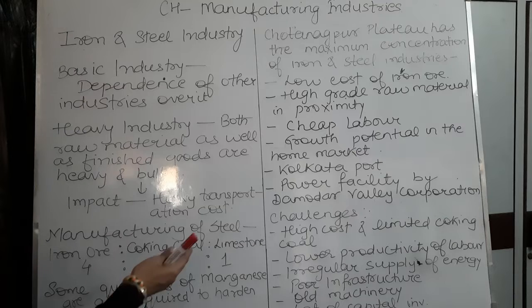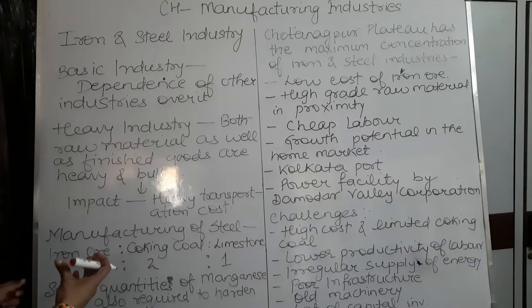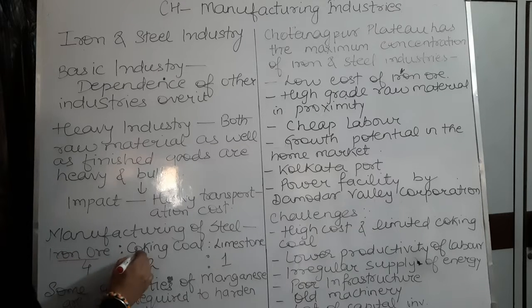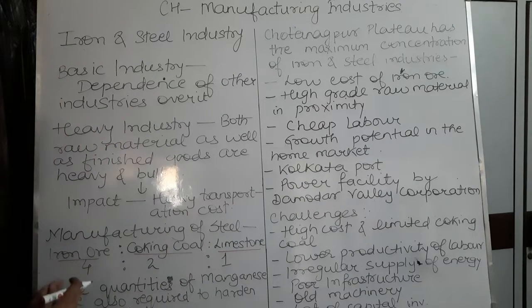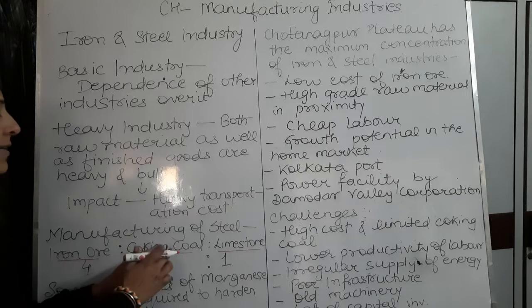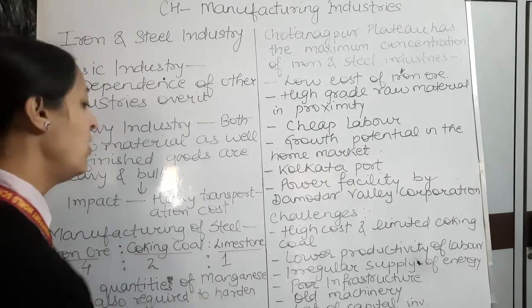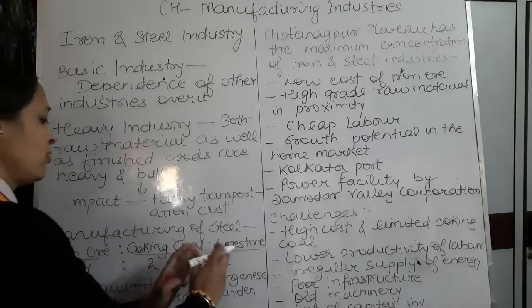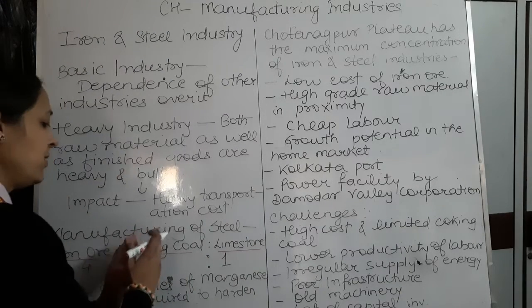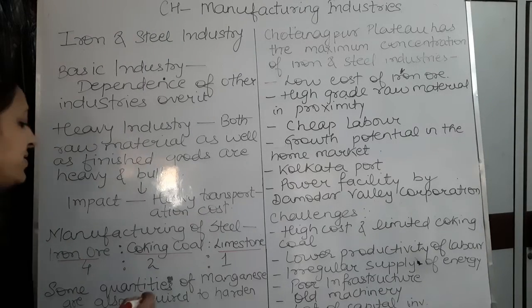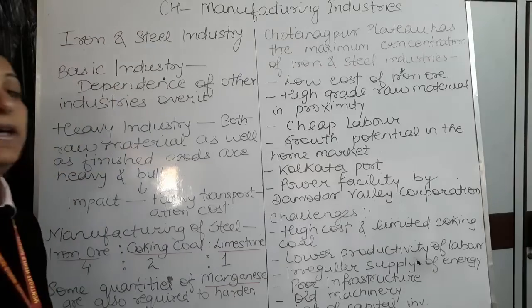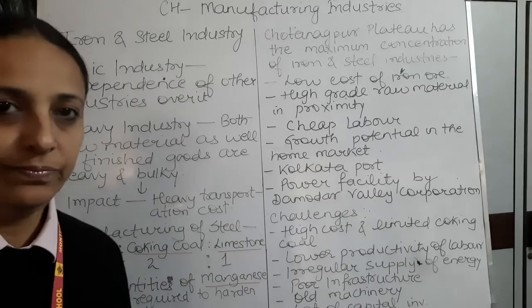Now let's see the manufacturing of steel. In terms of ratio, it is iron ore 4, coking coal 2, and limestone 1 — in the proportion 4:2:1. So iron ore, coking coal, and limestone are required in this proportion. Some quantities of manganese are also added to harden the steel.